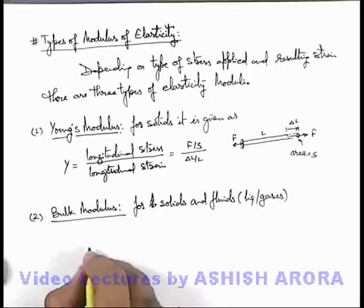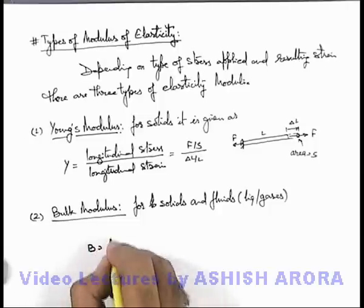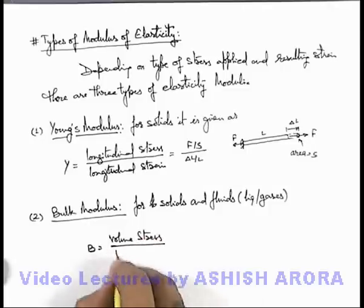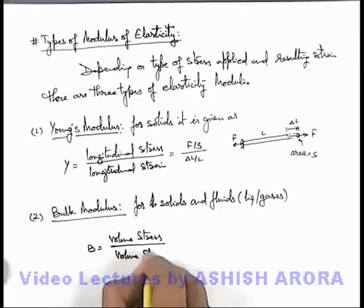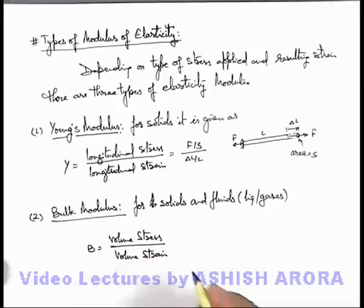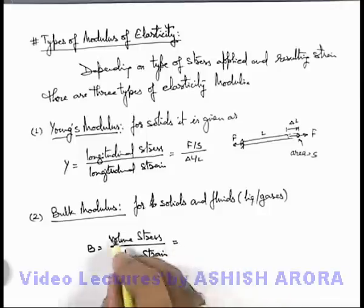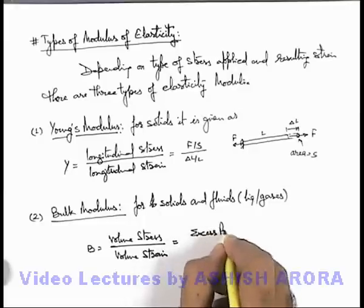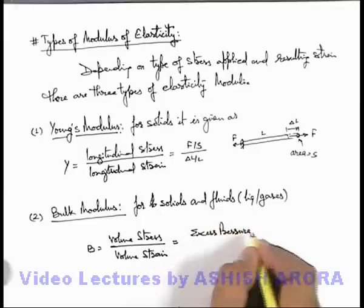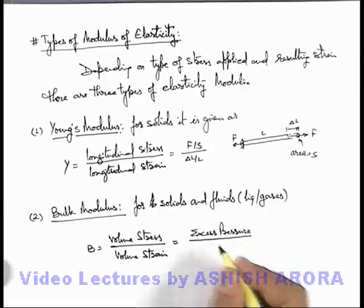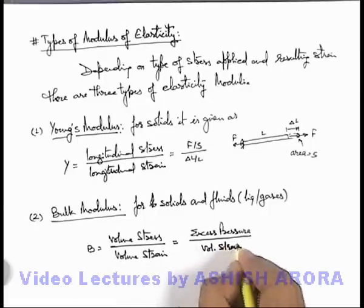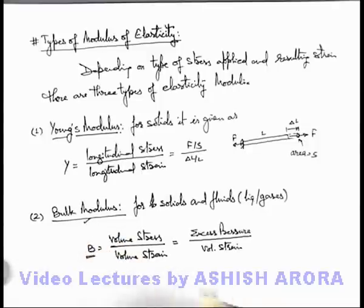And here we define this bulk modulus as B, which is equal to volume stress by volume strain. In volume strain we have studied that on a fluid body when an external pressure is applied, so volume stress can be simply written as the excess pressure. When an excess pressure is applied on a fluid body or any body, say its volume decreases by delta V, so corresponding volume strain can be taken and the ratio of the two can be defined as bulk modulus of elasticity.